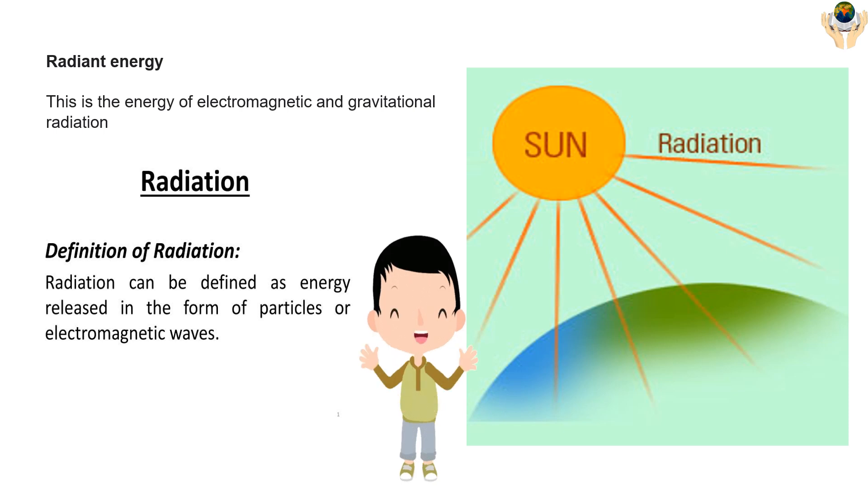Radiant energy is the energy of electromagnetic and gravitational radiation. Radiation can be defined as energy released in the form of particles or electromagnetic waves.